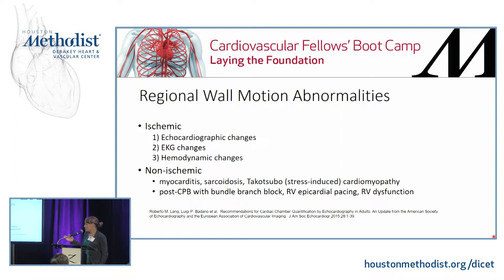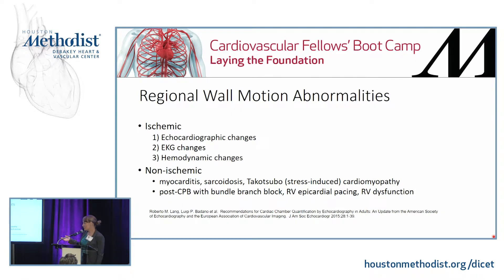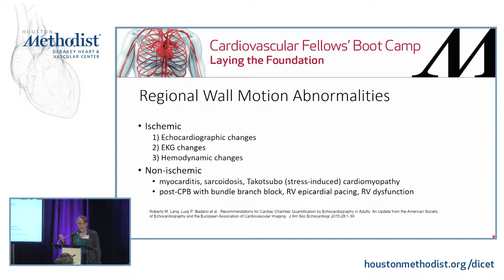Etiologies of regional wall motion abnormalities: it's important to be aware that not everything that appears as a regional wall motion abnormality is necessarily ischemic. Things such as myocarditis, takotsubo, and post-pump changes such as RV pacing or right bundle branch block should be ruled out as possible causes. The vast majority are ischemic. Intraoperatively, you're going to see physiologic changes on echo way before you see them on EKG, and certainly before any hemodynamic changes.